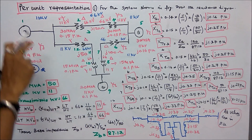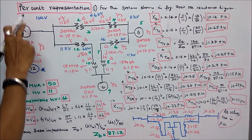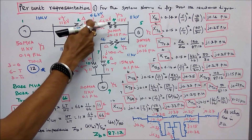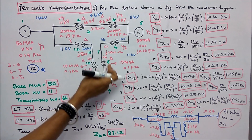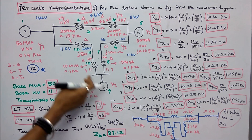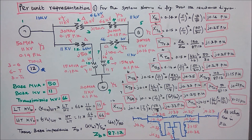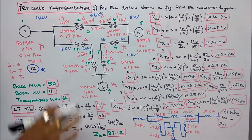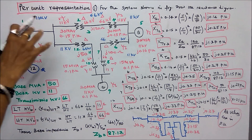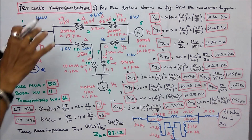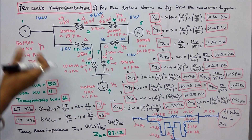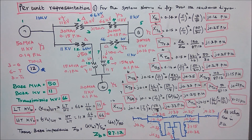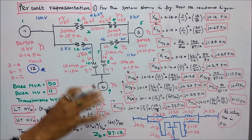Step 1: mark the components 1 through 12. Step 2: choose base MVA. Base MVA is equal to 50 — you may choose 100 or 30 as well. Base KV is equal to 11. I choose 11 for the low voltage side.